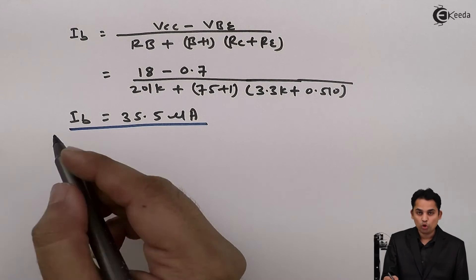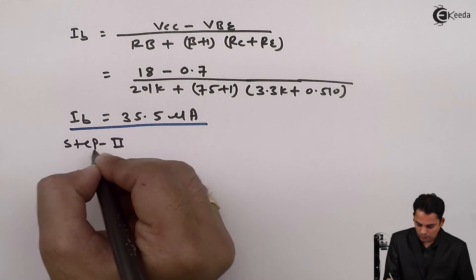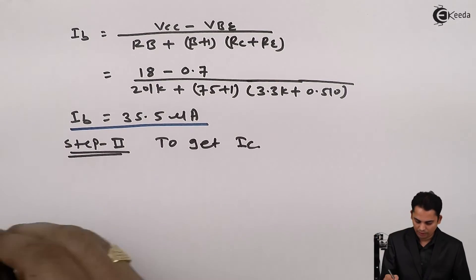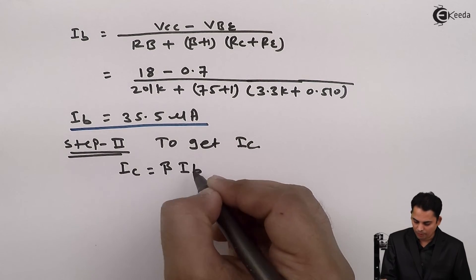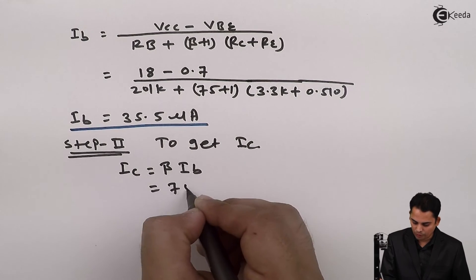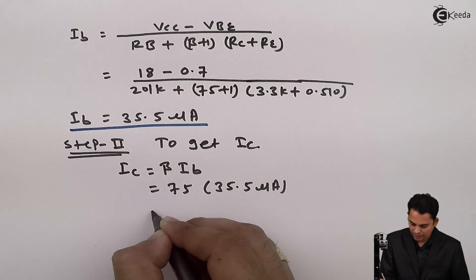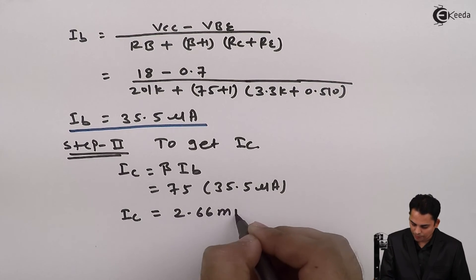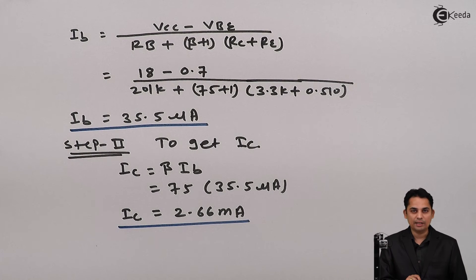The next step is to get collector current IC. We know that IC is equal to beta times IB. Beta is given as 75, multiplied by 35.5 micro amperes, which equals 2.66 milli amperes. So we have got collector current IC which is equal to 2.66 milli amperes.